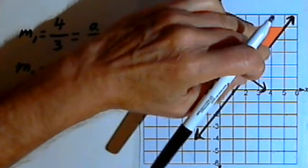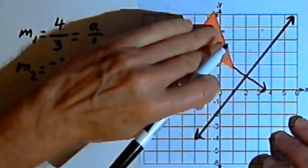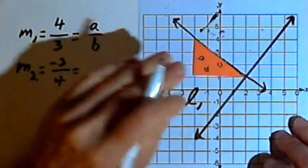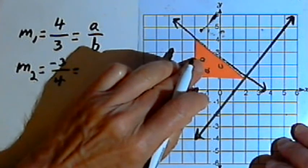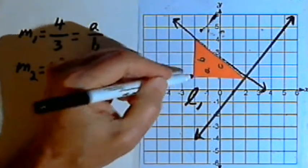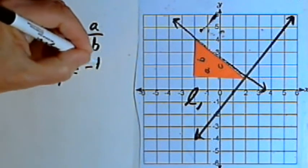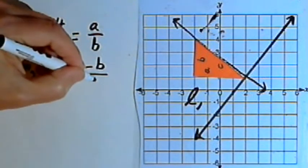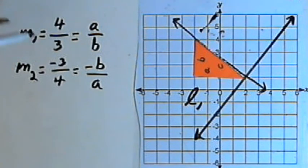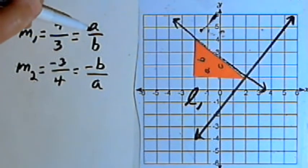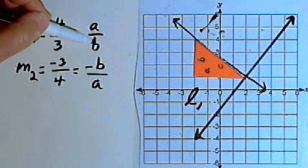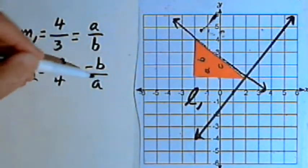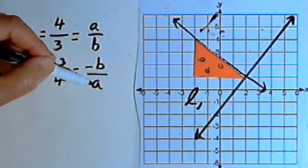And the slope of the perpendicular line L sub 2 is the rise, which is this side B, but it's negative, since it's going down, so it's negative B, over the length of side A. And so now I've got L sub 1, the slope of L sub 1, is A over B, and the slope of its perpendicular line is negative B over A.